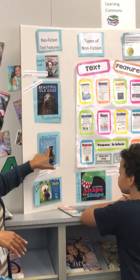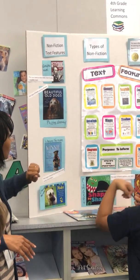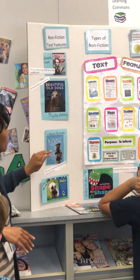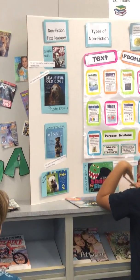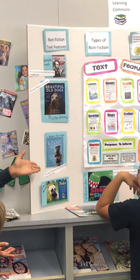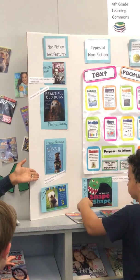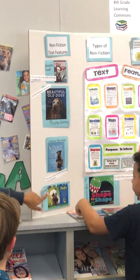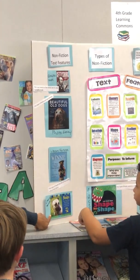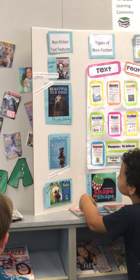This is a narrative non-fiction book, which means that it tells a true story. This one tells the true story of Winnie the Pooh, and this one tells the true story of a dog named Nubs.